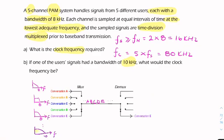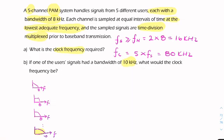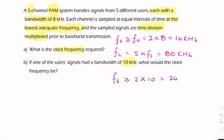So how will that affect the clock frequency? Well, clearly we will have to sample this signal at a higher sample rate. So the sample rate for the signal with the high frequency will now be at least 2 times 10, 20 kHz.